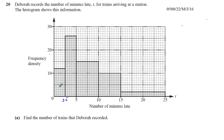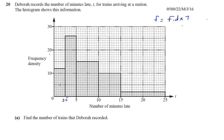What is important is that in a histogram, the y-axis — which is called the frequency density — does not tell you the number of items, or the frequency of that particular group. It doesn't tell you how many are in that group. You can't say there were 12 trains that arrived between 0 and 2.5 minutes late, because it's not the height of the bar which tells you the frequency — it's the area of the bar. The area of the bar is frequency density times how wide the bar is, so: Frequency = FD × I, where I stands for interval.